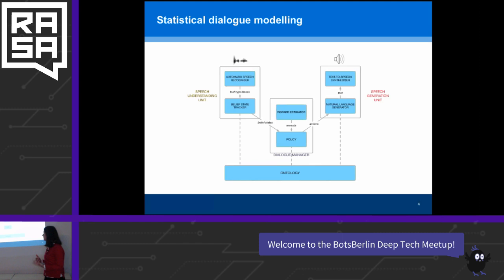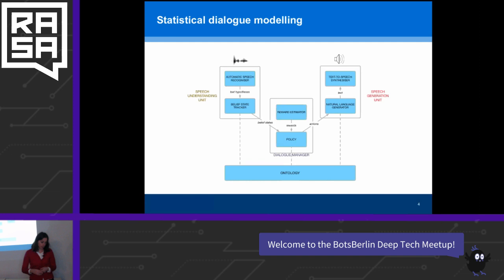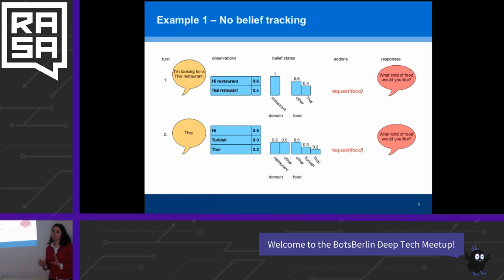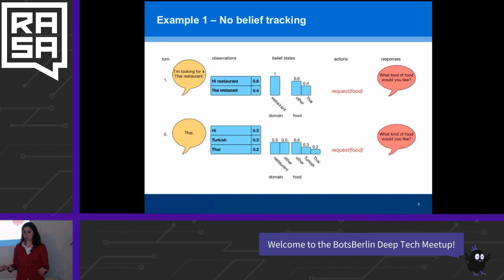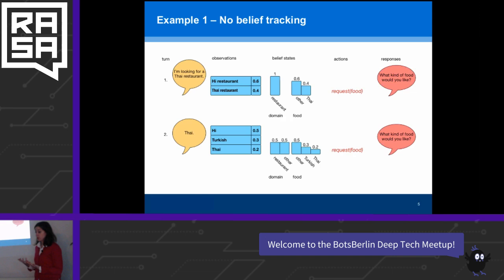That is how our state tracker becomes a belief state tracker. A belief state is a distribution over potential dialogue states. To explain what belief tracking is: say we're building a dialogue system that can recommend restaurants. The user calls and says 'I'm looking for a Thai restaurant.' This can be recognized as 'high restaurant' because 'high' and 'Thai' are very acoustically similar, or as 'Thai restaurant' with some smaller probability.